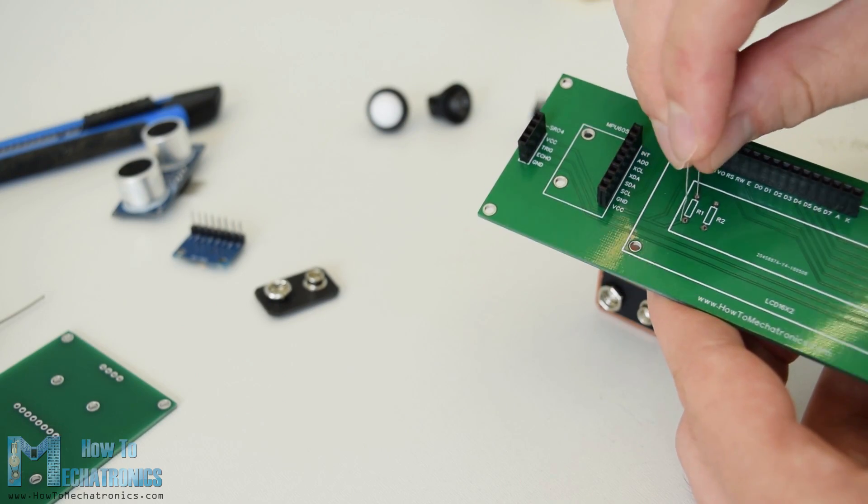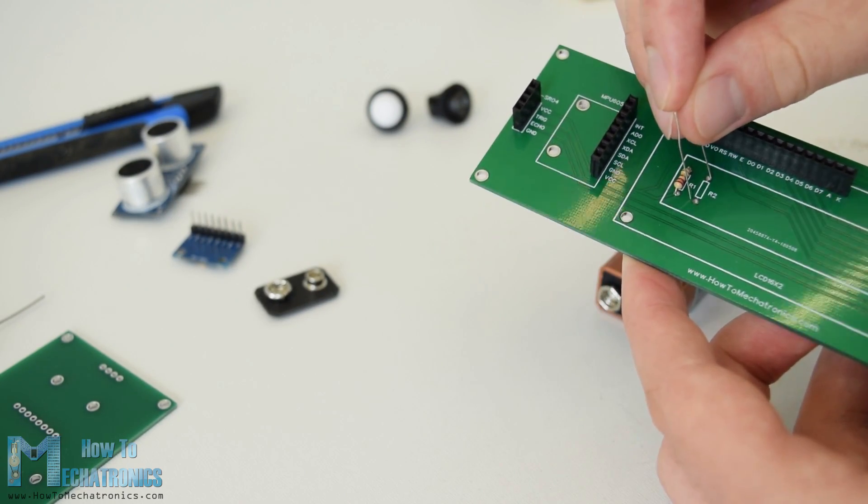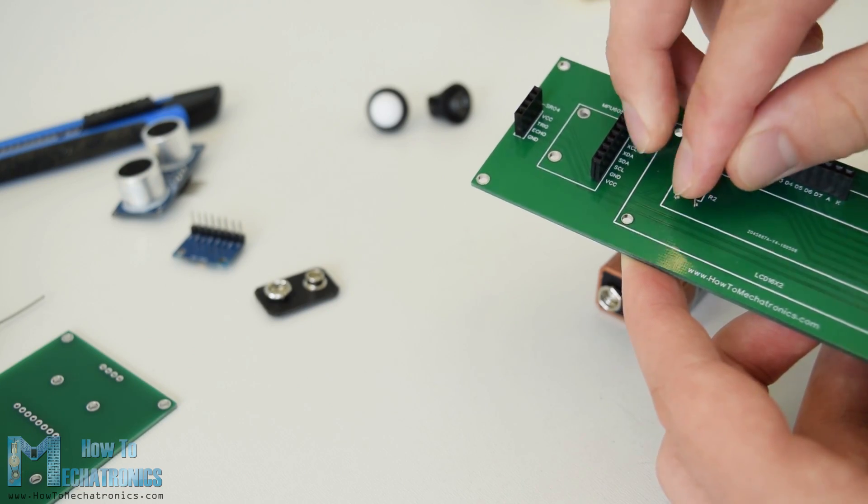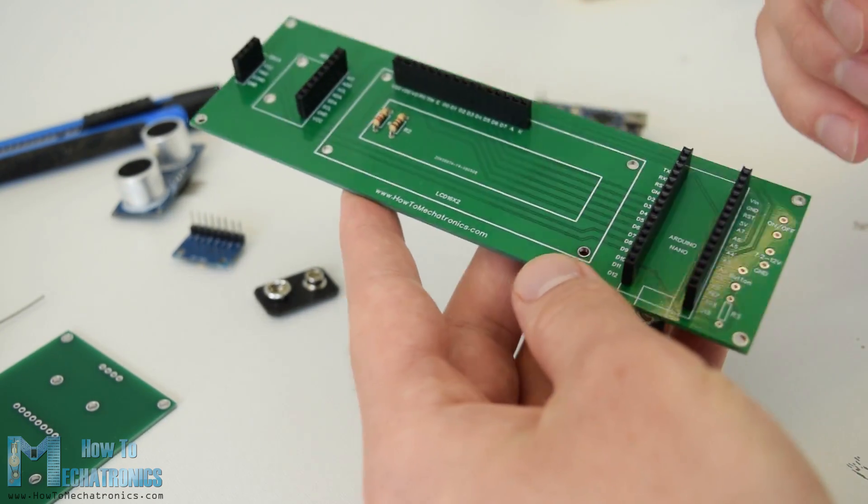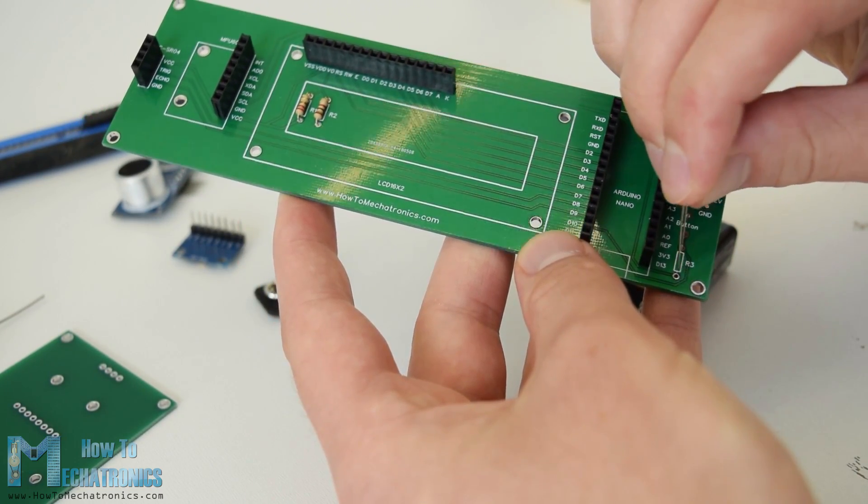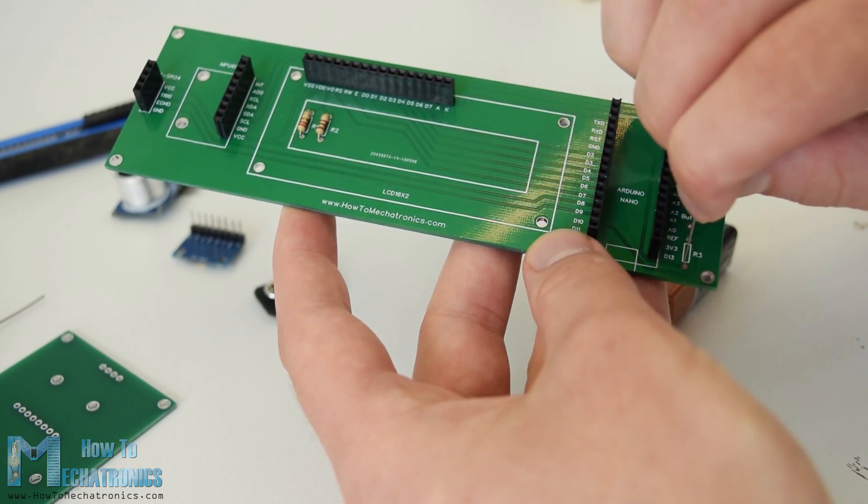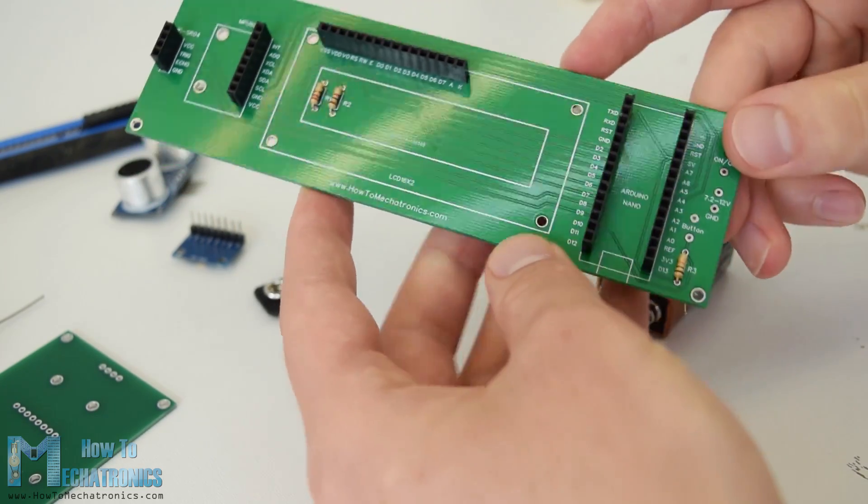Then I inserted and soldered the three resistors. Two of them are for the voltage divider for the contrast of the LCD. Here I actually inserted them wrongly - the 1K resistors should be placed at R1 and the 220 ohm resistors at R2. The third one is the pull-up resistor for the control button.